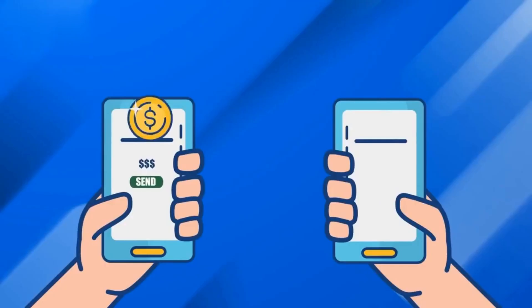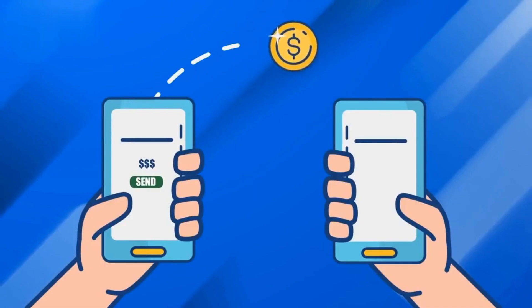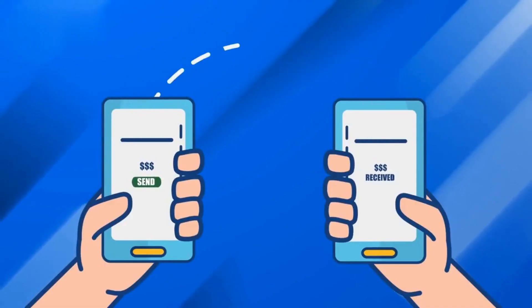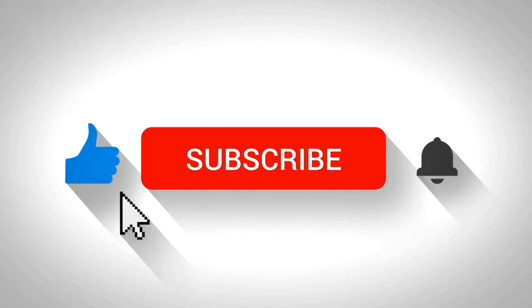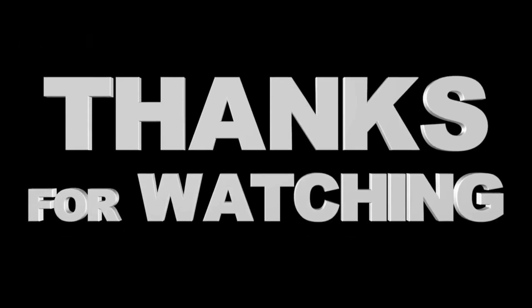That's it. With these quick steps, you've successfully deposited money into your FaucetPay account. Now you can use those funds for various microtransactions or hold them for potential growth. Don't forget to like and subscribe for more crypto tips. Thanks for watching.